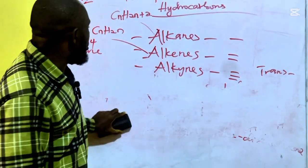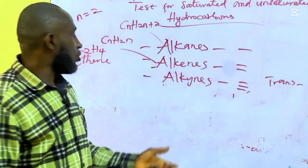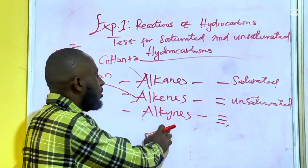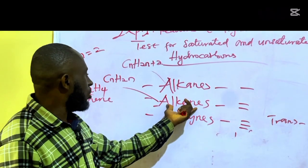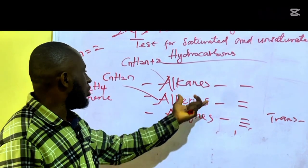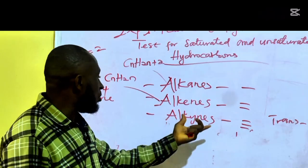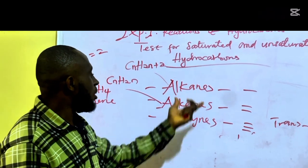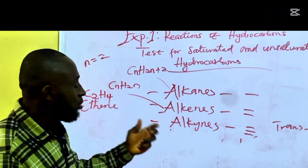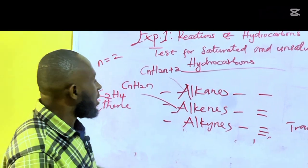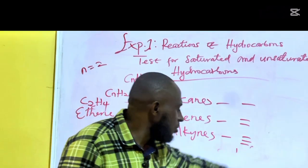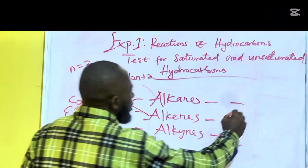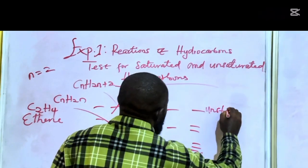Alkynes also undergo addition reaction and substitution reaction. They break down from triple bond to double bond, then from double bond to single bond — that is how their bonds break. In this experiment, we will be testing for unsaturated compounds.